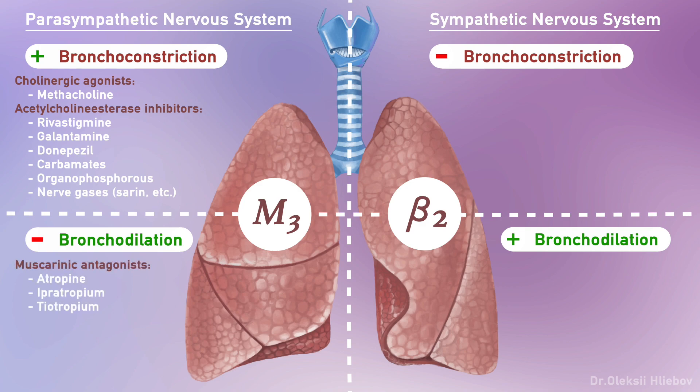Anticholinergic drugs or muscarinic antagonists like atropine, ipratropium bromide, and tiotropium bromide cause bronchodilation by preventing acetylcholine interaction with muscarinic receptors. Blockade of M3 receptors in the bronchial glands decreases secretion as well.